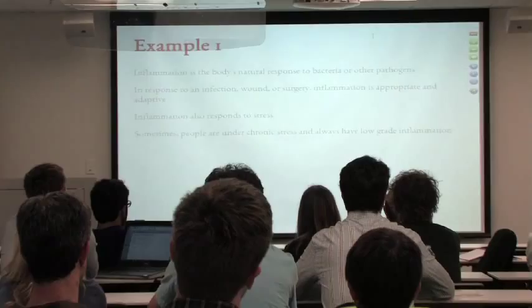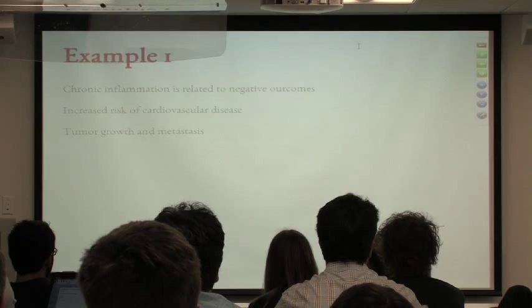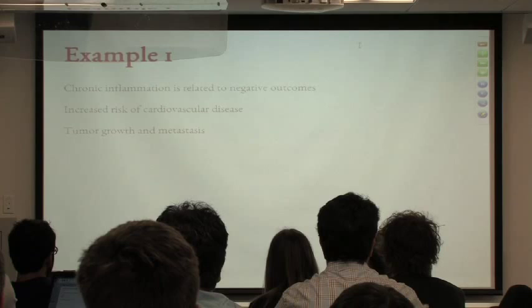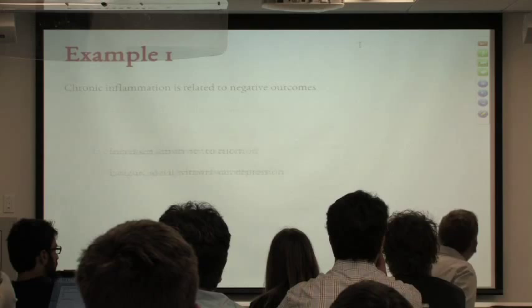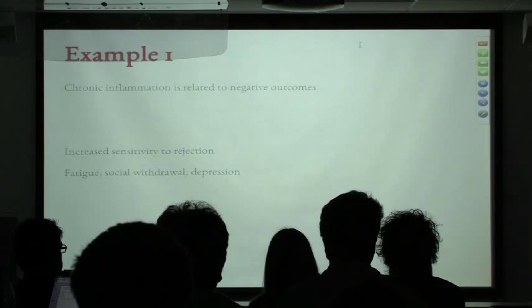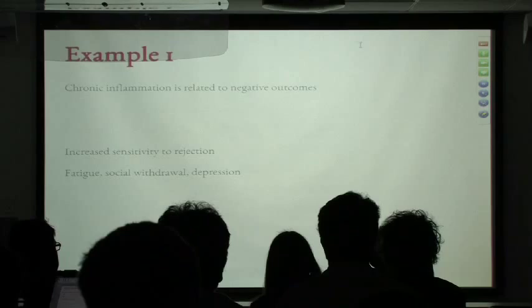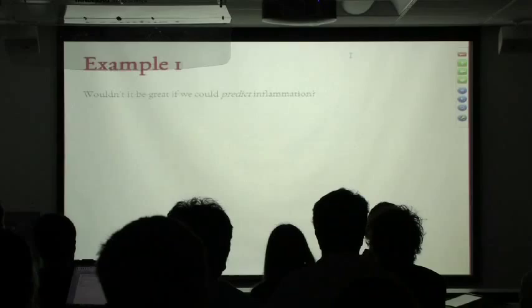Inflammation also responds to stress, not as strongly as to a physical assault, but it does respond. People under chronic stress can have low-grade inflammation throughout their lives. There's good reason to believe that chronic low-grade inflammation is associated with negative outcomes: cardiovascular disease, increased risk of tumor growth or metastasis, and psychological outcomes like increased sensitivity to social rejection, fatigue, and social withdrawal.